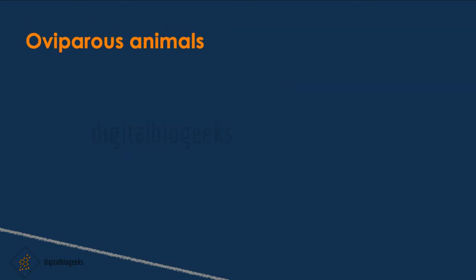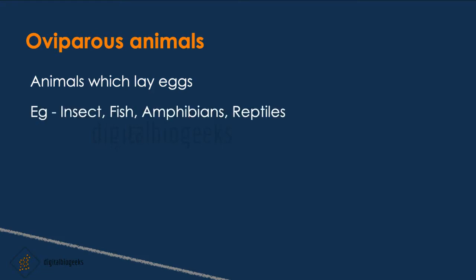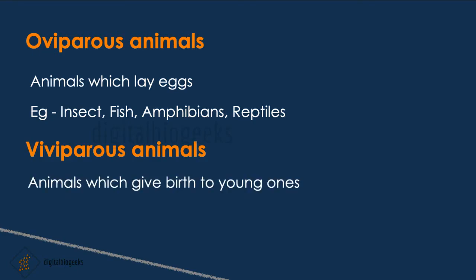Let's learn about oviparous and viviparous animals. Based on whether the development of the zygote takes place outside or inside the body of the female, animals are divided into two groups. Oviparous animals are those which lay eggs — examples are insects, fish, amphibians, and reptiles. Viviparous animals give birth to young ones — examples are cat, dog, human, and elephant.